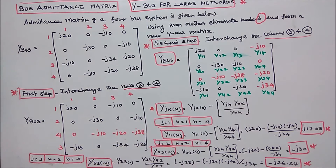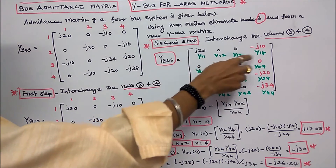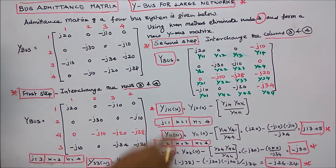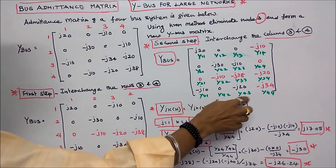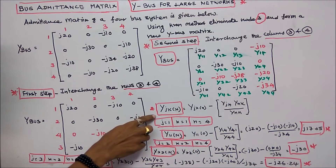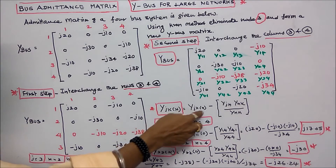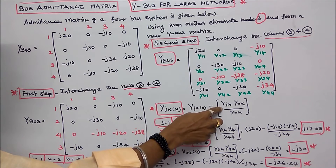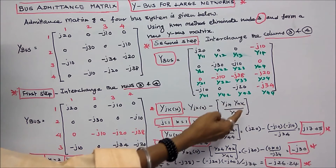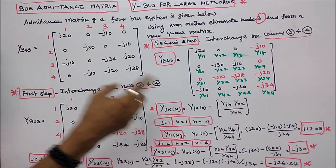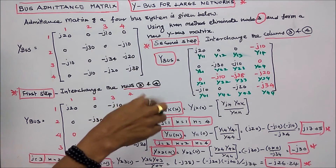Then mark the matrix elements y11, y12, y13, y14, y21, y22, y23, y24, y31, y32, y33, y34, y41, y42, y43, y44. The Kron's method formula is: y_jk new = y_jk old minus (y_jn times y_nk) divided by y_nn, where n is the number of buses, j equals 1, 2, 3 and k equals 1, 2, 3.